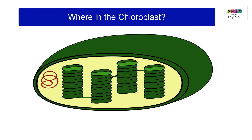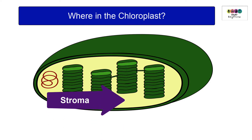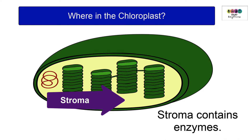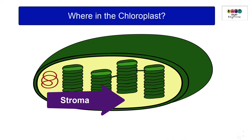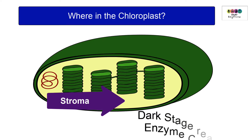Where in the chloroplast do the dark stage reactions take place? They take place in the liquid part of the chloroplast called the stroma, which contains many enzymes. So the reactions of the dark stage, or the Calvin cycle, are enzyme-controlled — whereas the light stage reactions are not, because they happen too quickly.